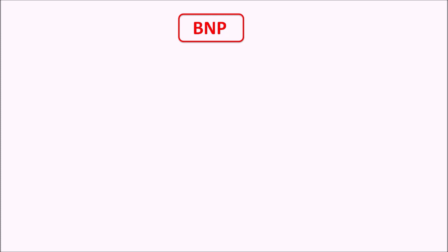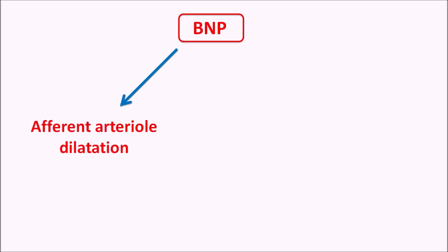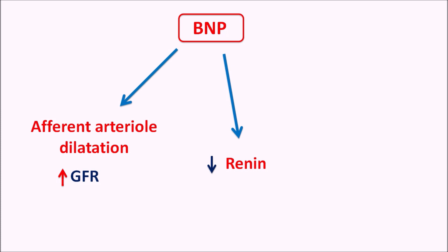BNP also acts on the renal system. It produces efferent arteriolar vasodilation, which increases the rate of filtration, resulting in an increased glomerular filtration rate. This improves excretion of minerals such as sodium. BNP also reduces renin release, so the renin-angiotensin system is inhibited, and it inhibits angiotensin II secretion. Finally, BNP inhibits the activity of ADH (antidiuretic hormone), thereby promoting excretion of water, which reduces body volume and cardiac work. When untreated, elevated BNP levels can be used as a diagnostic tool to assess heart failure.